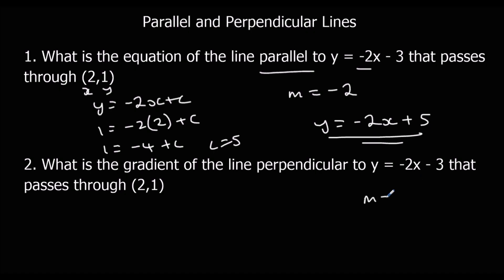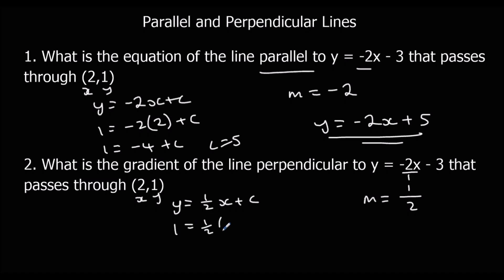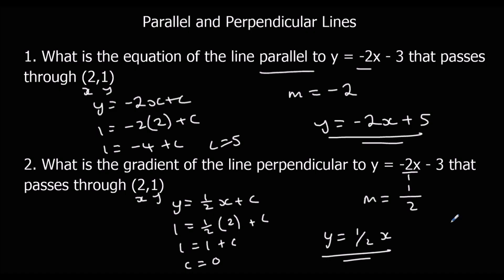For the perpendicular line, we're going to flip and minus. If we write 2 as a fraction it's 2 over 1, so flipped over is 1 over 2. And it's already a minus, so it becomes a plus — the gradient is a half. So y equals half x plus c. Substituting x equals 2 and y equals 1: 1 equals half times 2 plus c, giving 1 equals 1 plus c, so c is 0. Therefore y equals half x — there is no c, it goes through (0, 0).